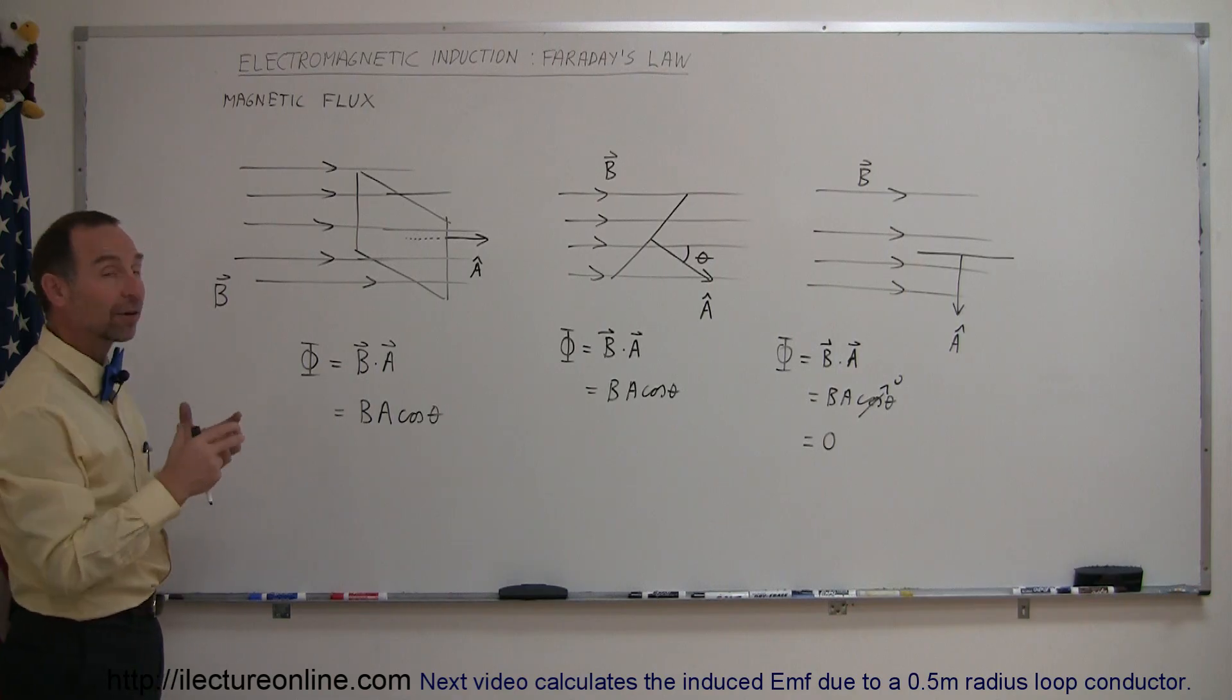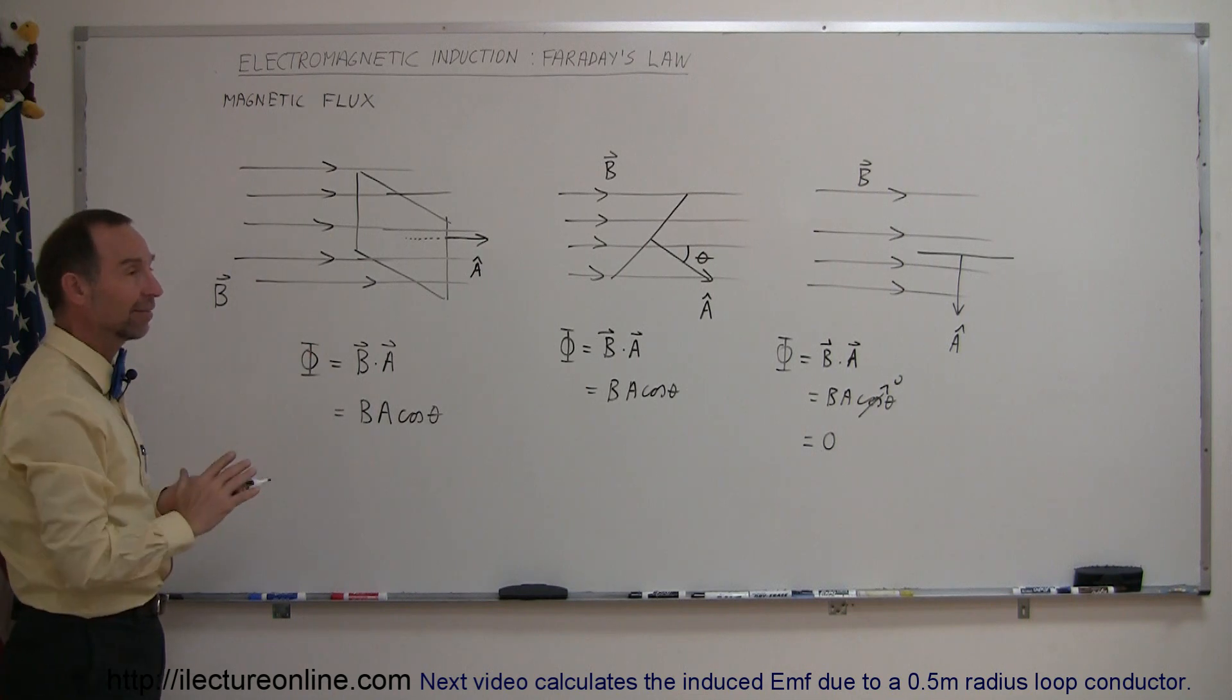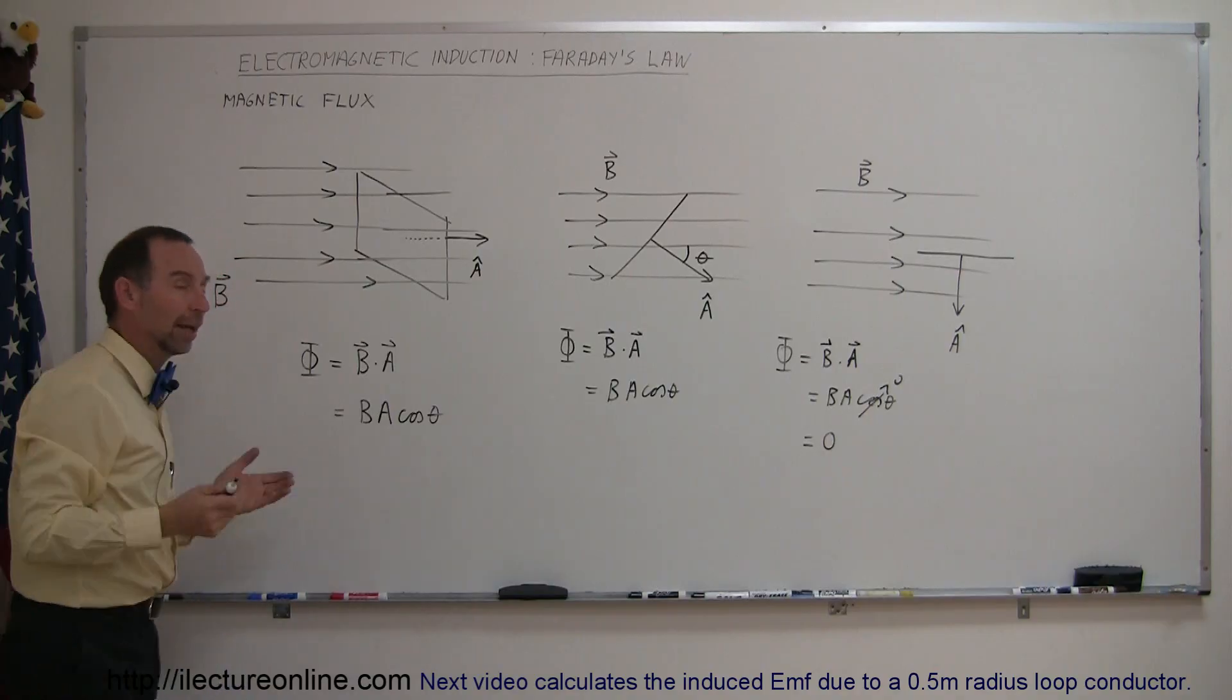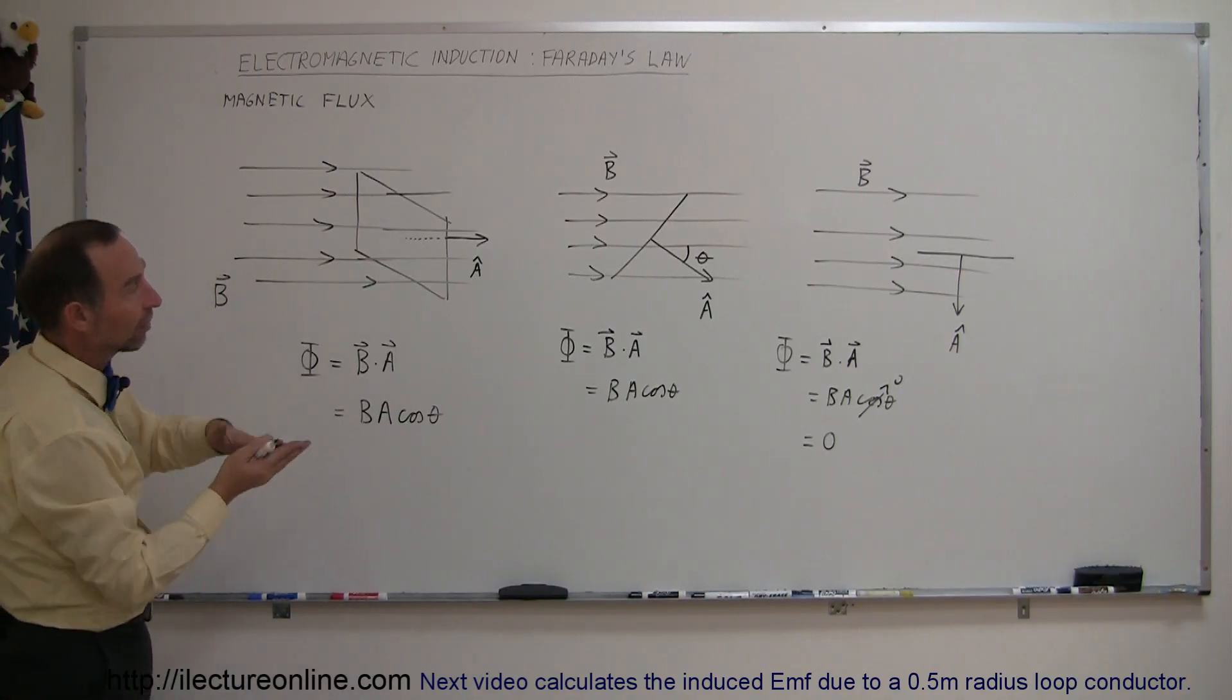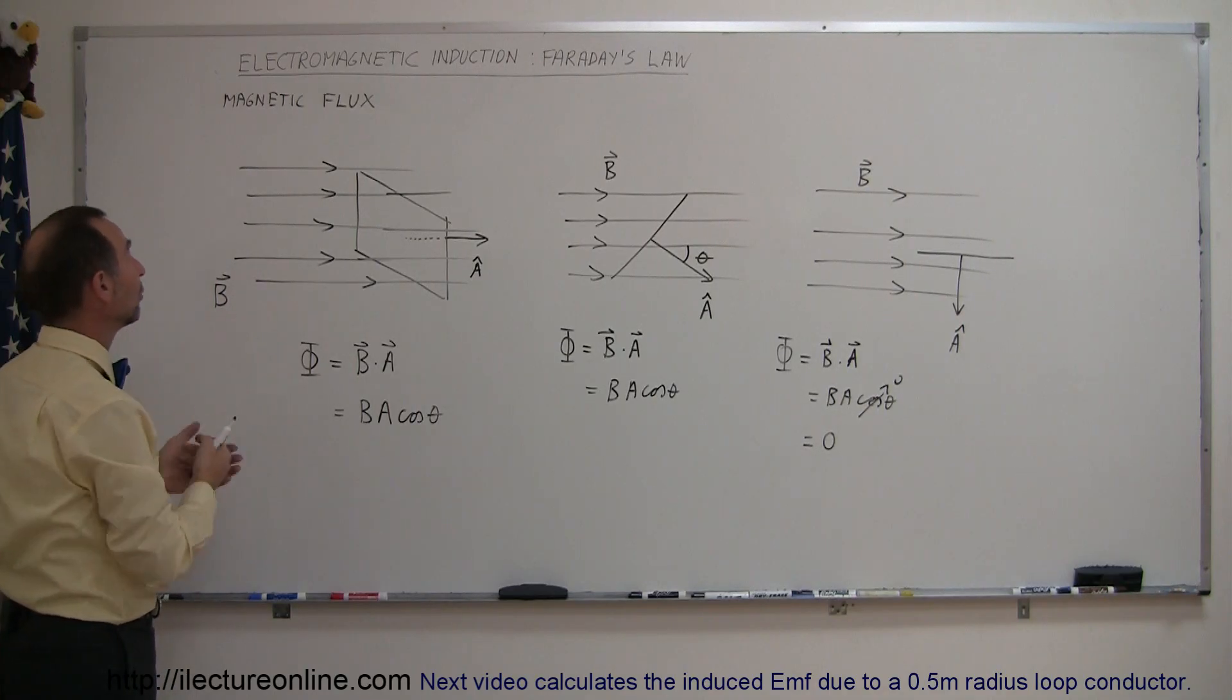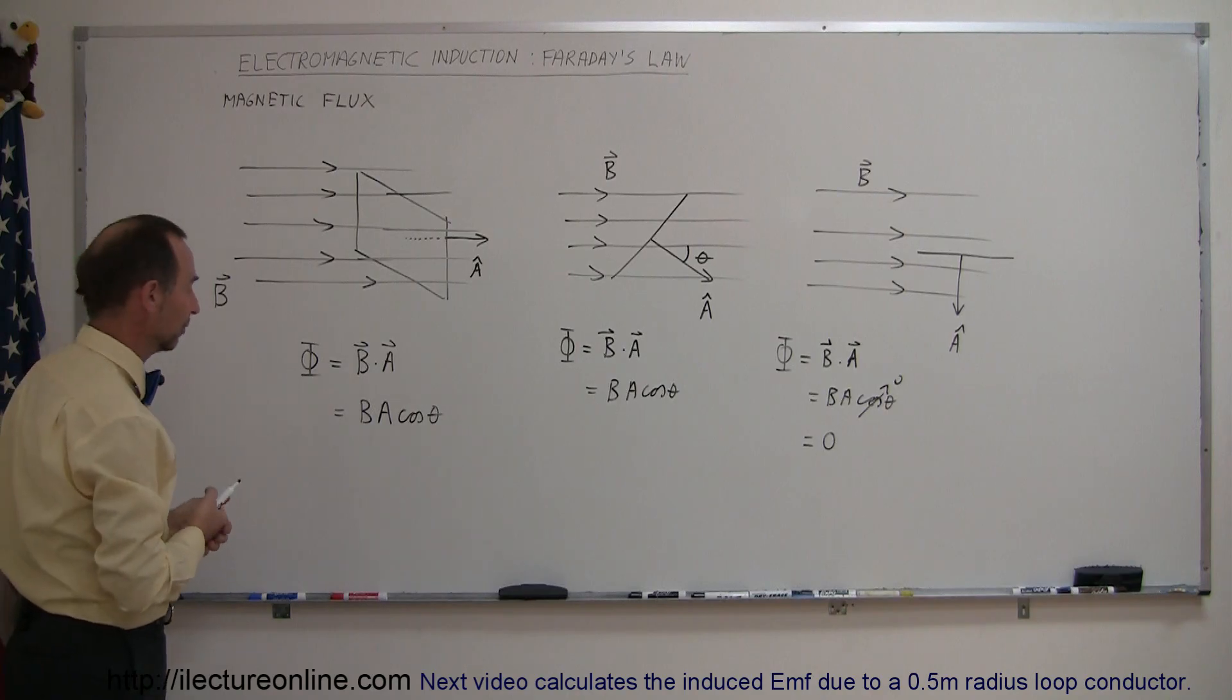Alright, so now you have a concept of what magnetic flux is and how we calculate it. It's simply how much B field goes through the area, and of course if the area is on its side, and there's no way that the B field can go through it, then the sum will be 0. Okay, now let's do an example to introduce to you the concept of electromagnetic induction.